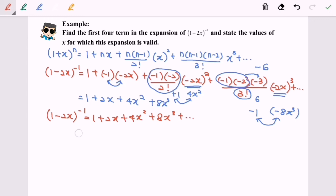So the validity will be substituting the value negative 2x. So we will have -1 < -2x < 1. So simplify the situation, we will have negative 1/2 < x < 1/2. So valid for this expansion.